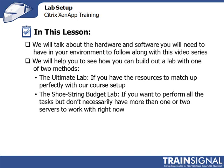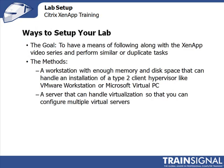The shoestring budget lab consists of how you can do this with regular desktop machines — how much memory you need and what kind of software you can add to make it work. The goal is to have a means for you to follow along with the XenApp videos in this series. The method: you can have a workstation with enough memory and disk space to handle an installation of a Type 2 client hypervisor like VMware Workstation or Microsoft Virtual PC. If you have a desktop with decent memory, good disk, and a capable CPU, you can install VMware Workstation and start loading up virtual machines.